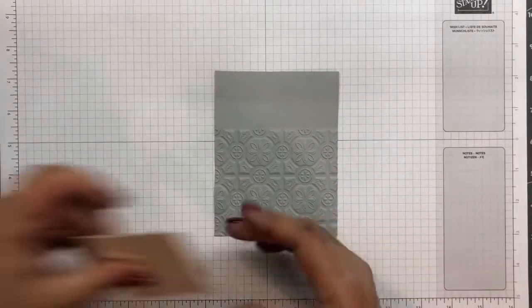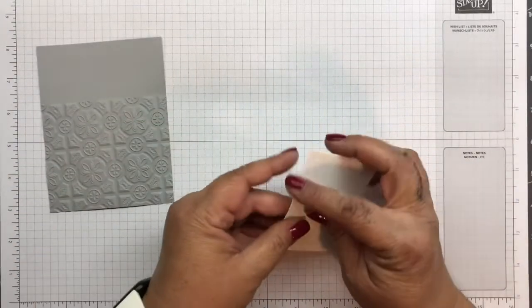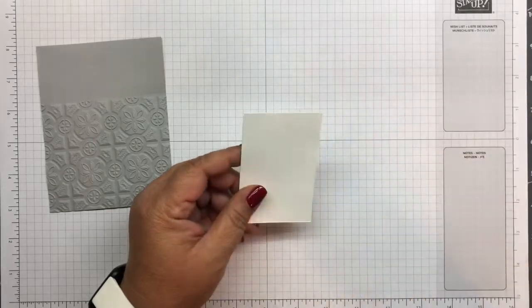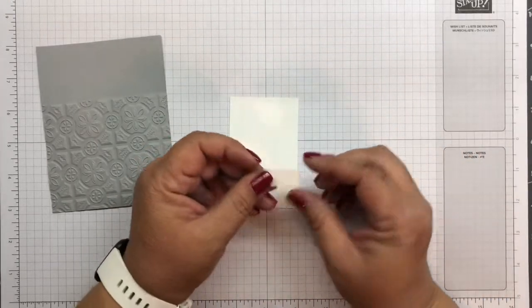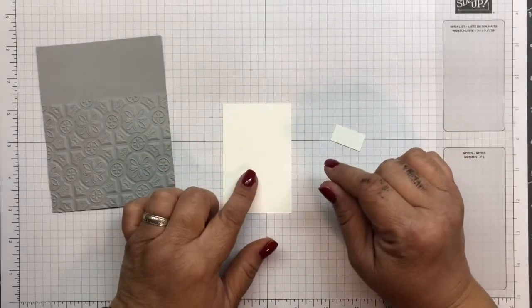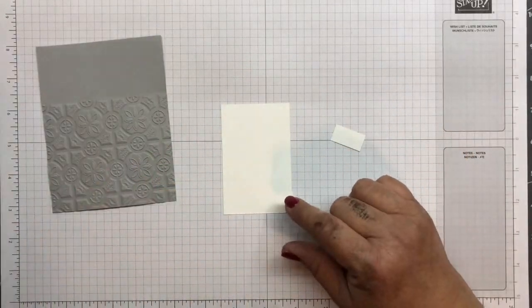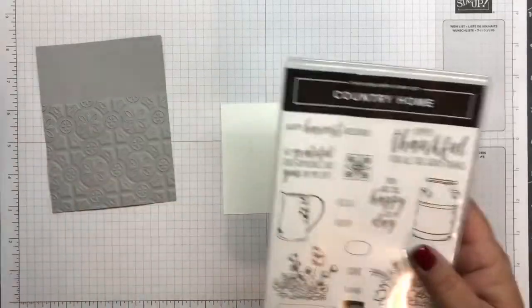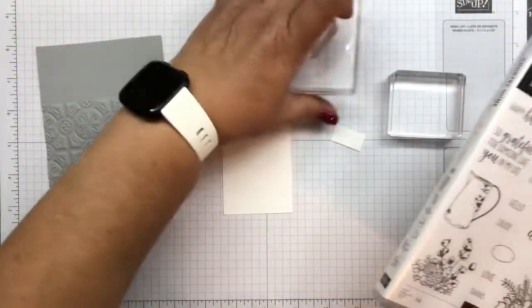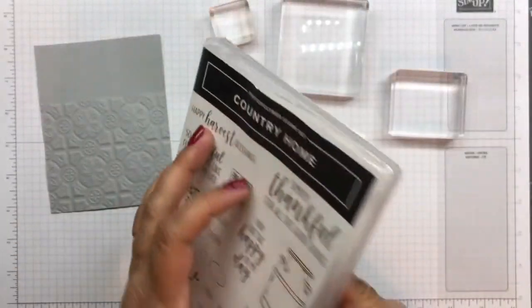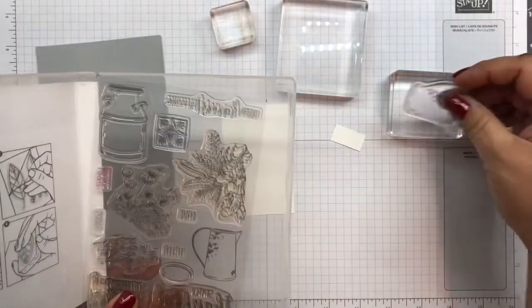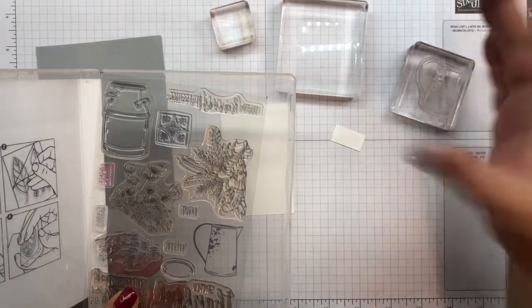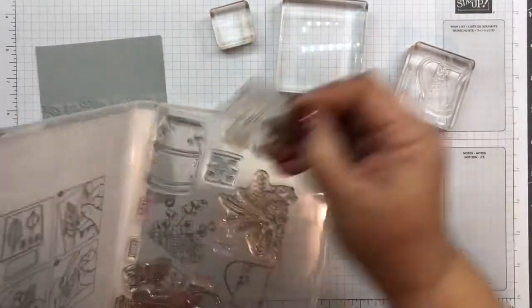So the next thing we have is we'll do our stamping. And we've got two pieces of Whisper White. This is cut at half an inch by one inch for this little piece. And this one is cut at two and a quarter by three and a half. So we're going to get our Country Home stamps out here. I'm going to get this picture. And we're going to get this design.